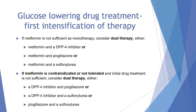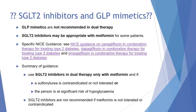At first intensification of drug treatment, if metformin is not sufficient as monotherapy, we need to consider dual therapy: metformin and a DPP-4 inhibitor, metformin and pioglitazone, or metformin and a sulfonylurea. If metformin is contraindicated or not tolerated and initial drug treatment is insufficient, dual therapy options are a DPP-4 inhibitor and a sulfonylurea, or pioglitazone and a sulfonylurea. SGLT2 inhibitors in combination with metformin may be appropriate only if a sulfonylurea is contraindicated or not tolerated and the person is at significant risk of hypoglycaemia. However, SGLT2 inhibitors are not recommended in dual therapy if metformin is not tolerated or contraindicated.